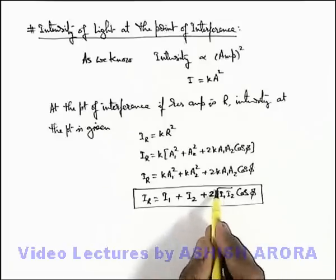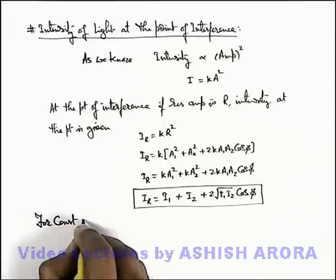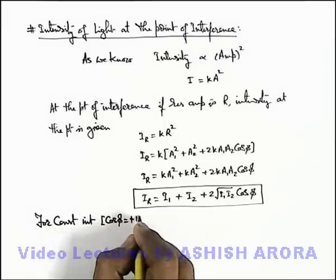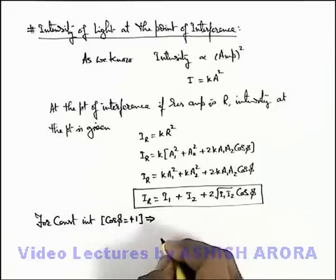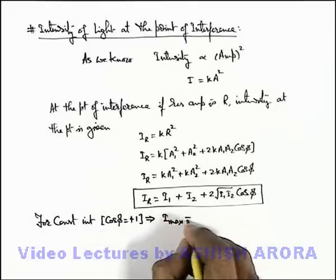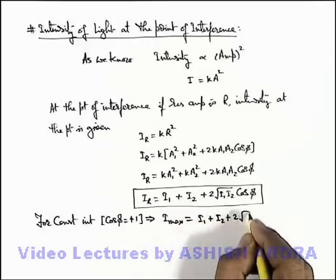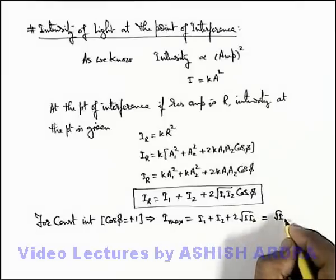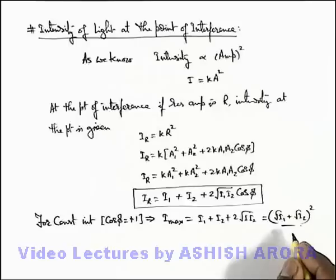If we further analyze for constructive and destructive interference: for constructive interference, the value of cos(φ) equals plus 1, as the two waves superpose in the same phase. This implies the resulting intensity is maximum, given as i1 + i2 + 2·√(i1·i2), which rearranges to (√i1 + √i2)². This is the intensity at the point of constructive interference.